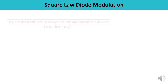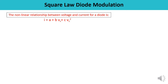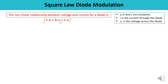We now recall the non-linear relationship between voltage and current for a diode, written as: i = a + b·vs + c·vs², where a, b, and c are constants, i is the current through the diode, and vs is the total voltage across the diode. We substitute our expression for vs, which is the sum of vc and vm, into this equation.